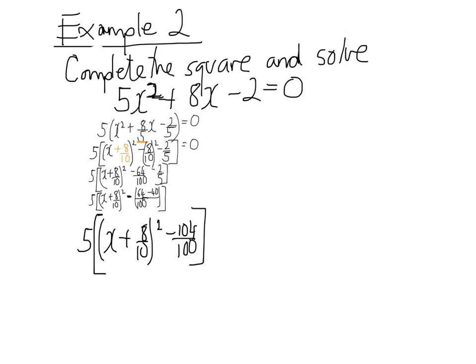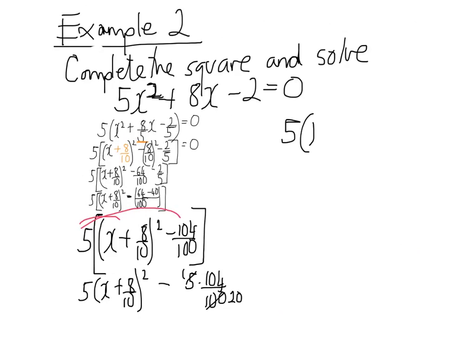Now I'm ready to times this 5 by this bit and then by this bit. I get 5 lots of x plus 8 over 10 squared and then 5 times 104 over 100 — that cancels and gives me 104 over 20. So I've got 5 times x plus 8 over 10 squared minus 104 over 20. Dividing through by 4 gives me 5 and 26. And that's all equal to 0.